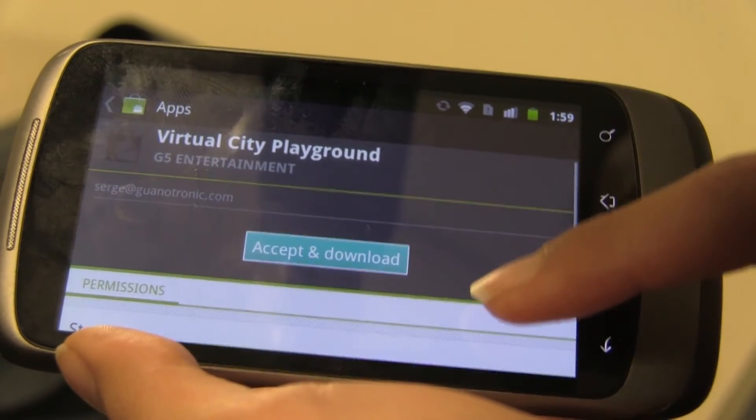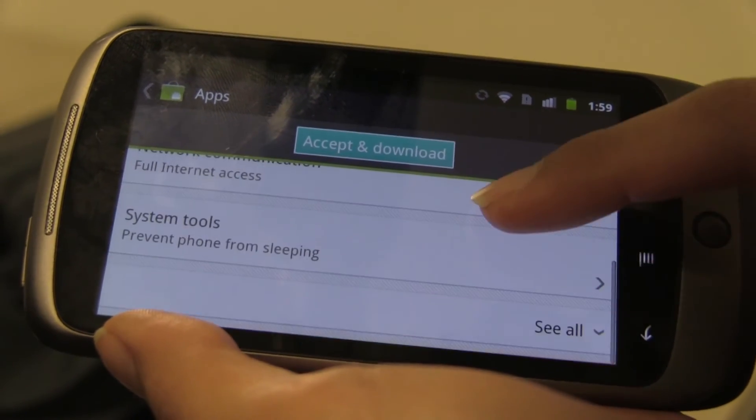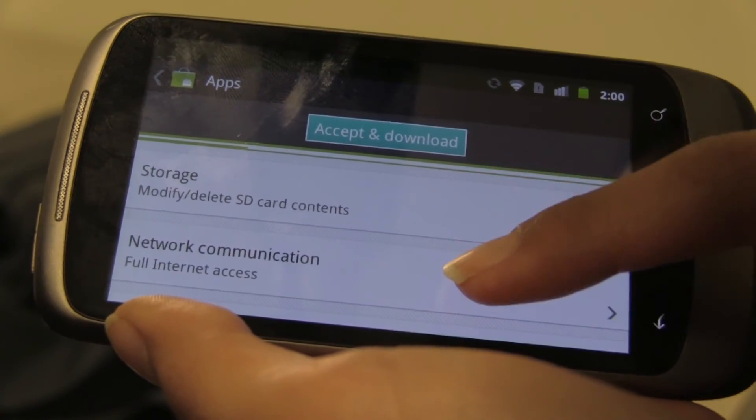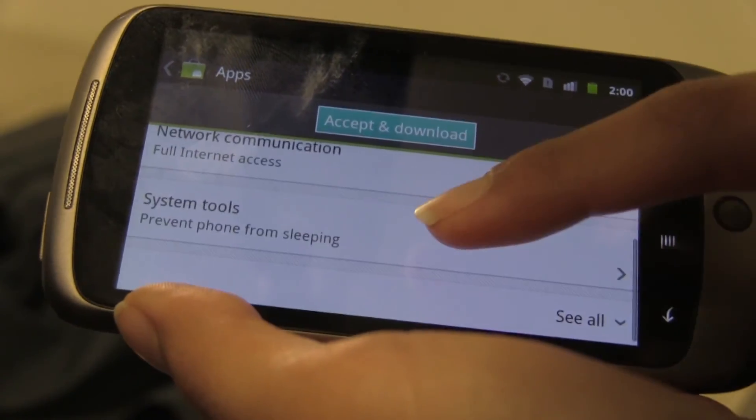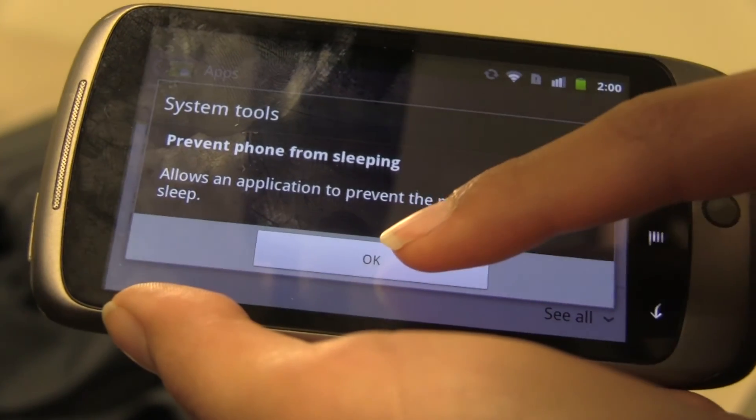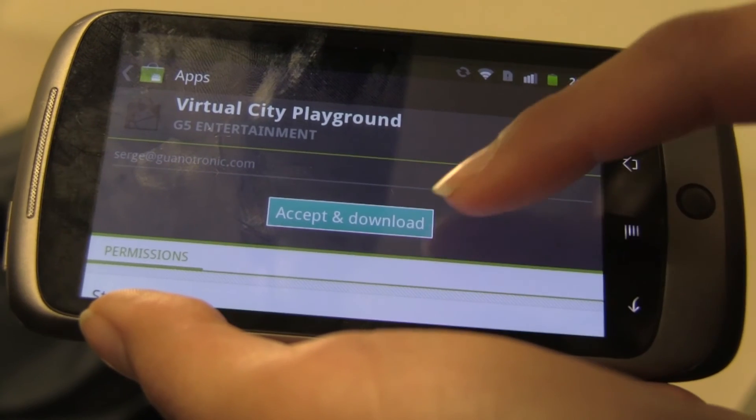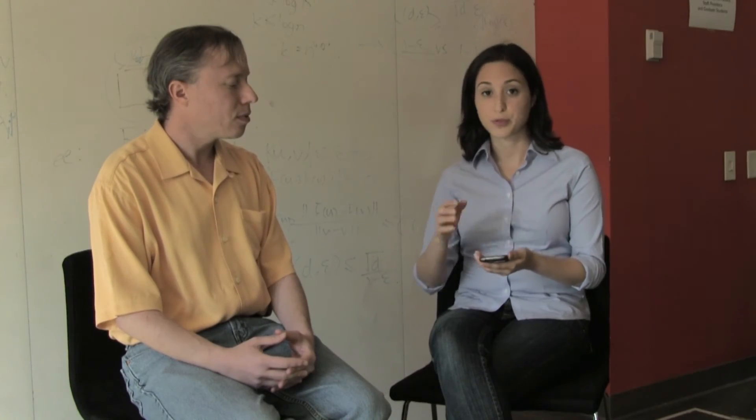When a user installs an application from the Android market, they're shown things called permissions, which are small warnings that tell the user about all of the resources that the application gets access to on their phone. For example, for this application I'm looking at, the application can get access to location, the internet, the list of contacts, camera, etc. The user is warned before the application installation is completed that the application can do all of these things.